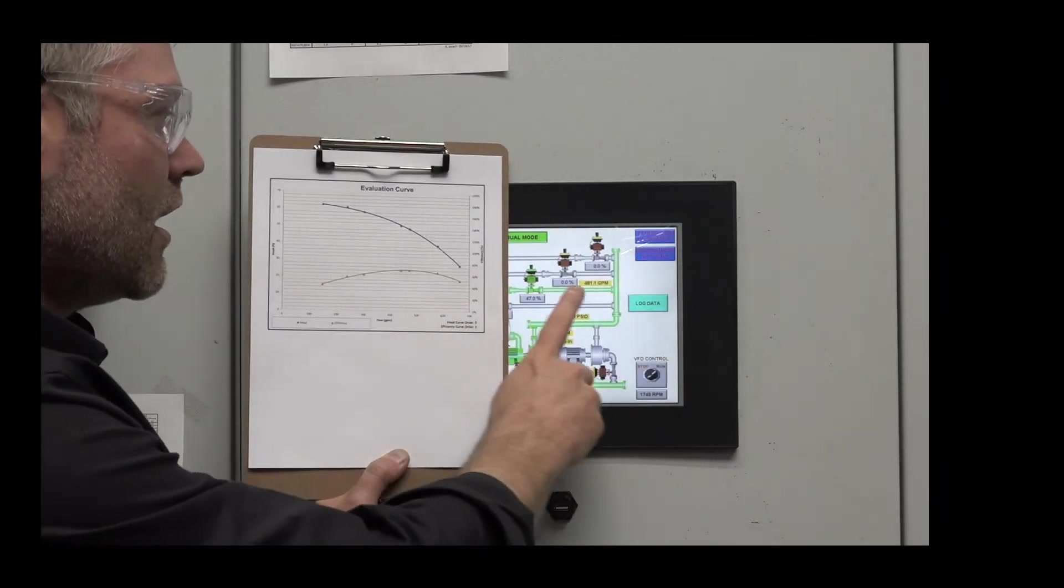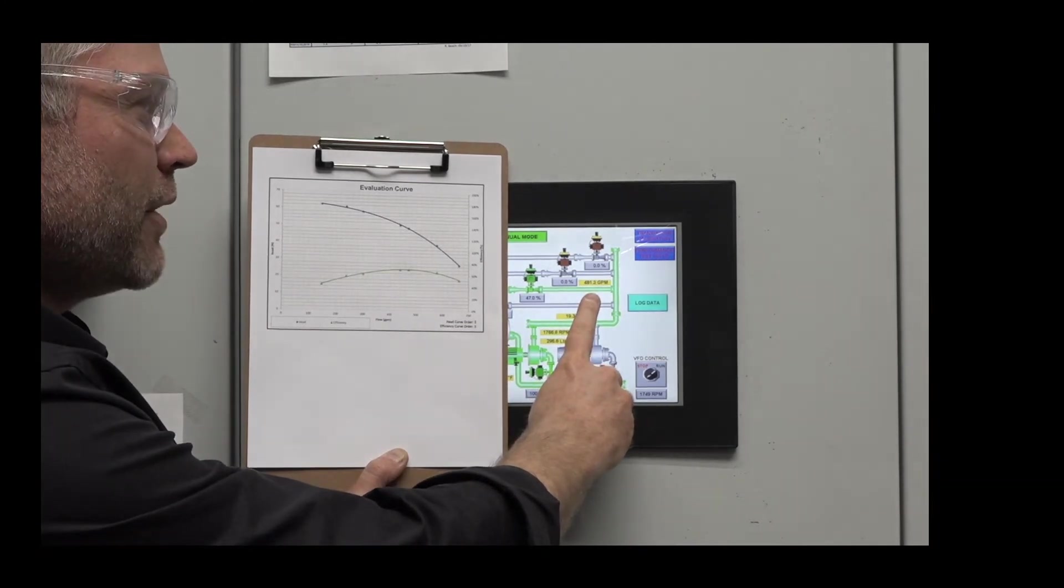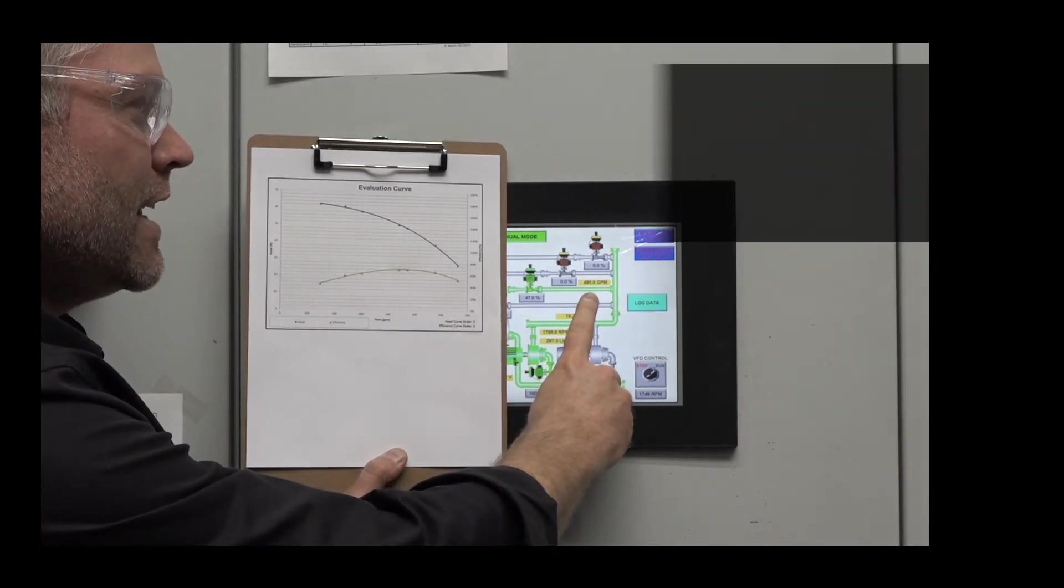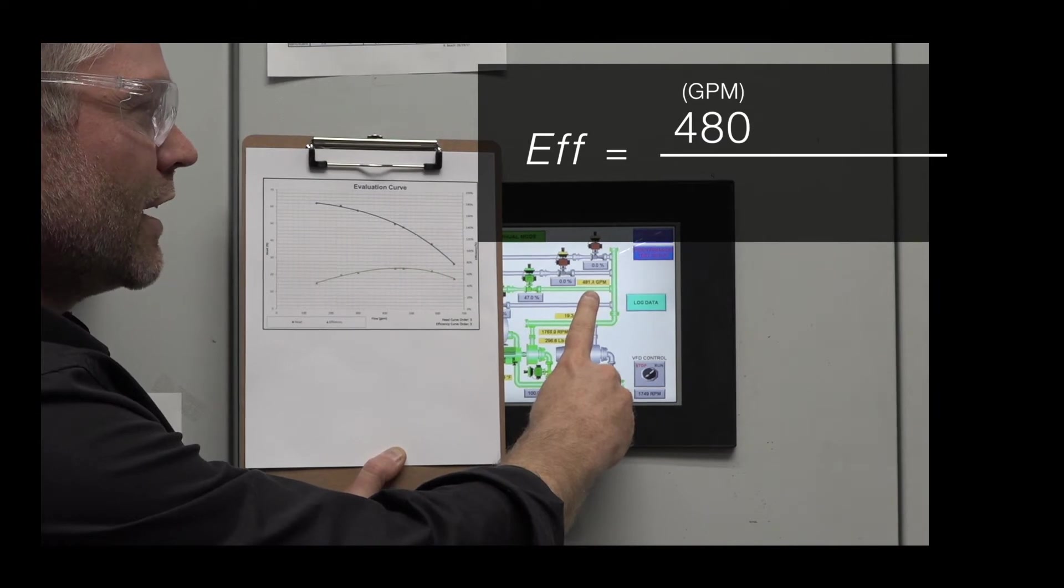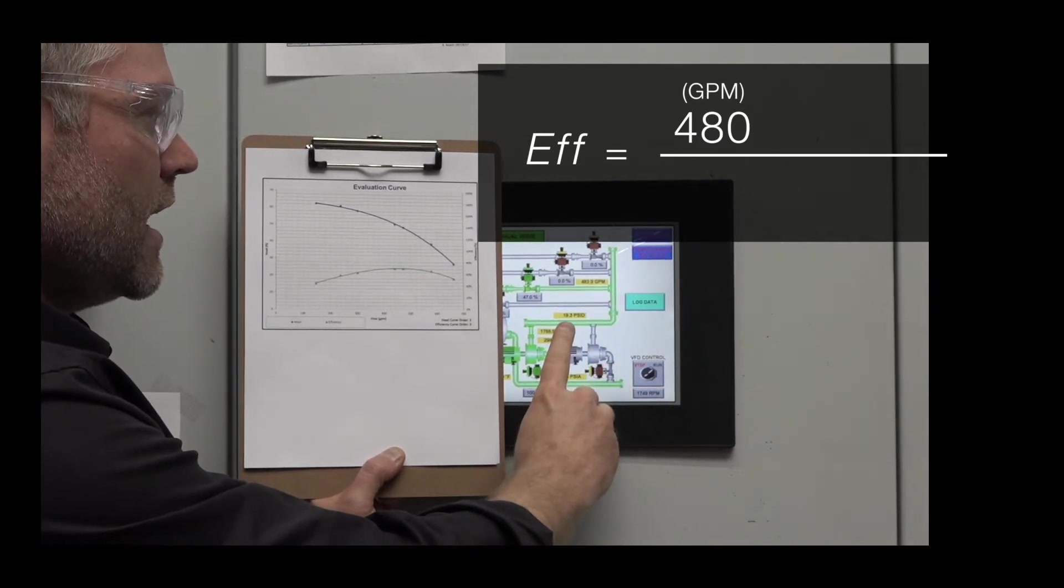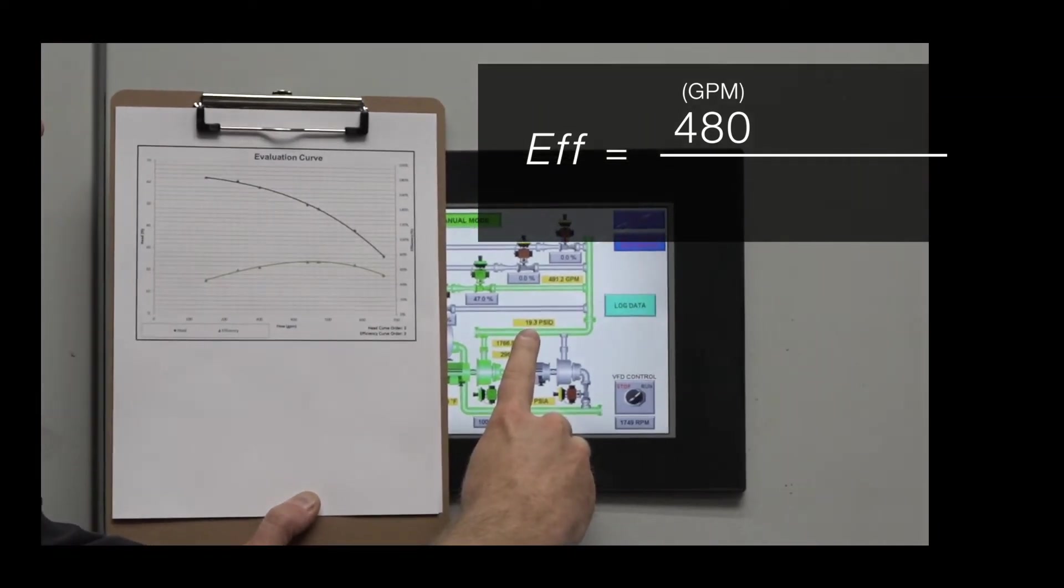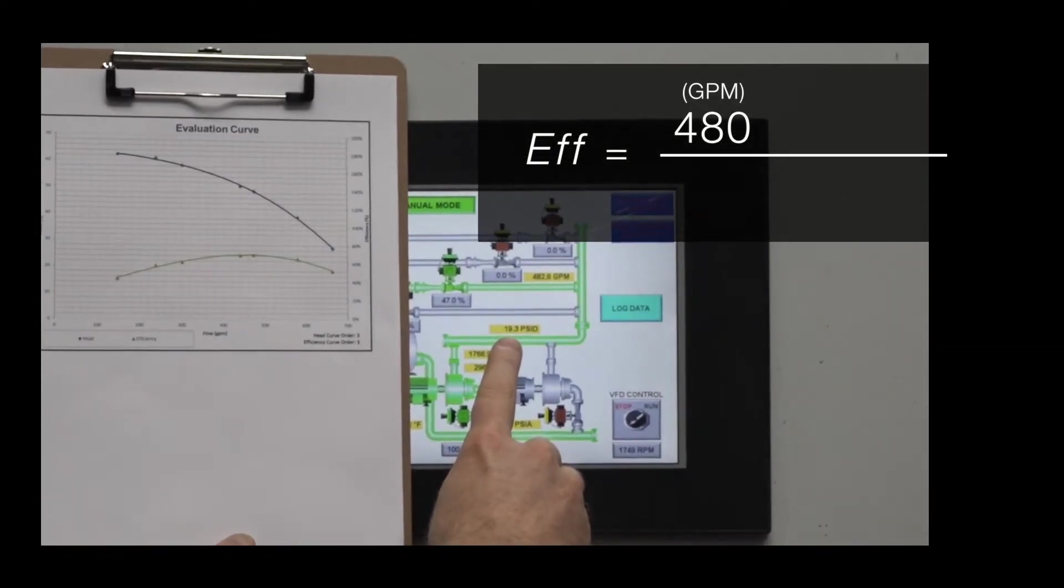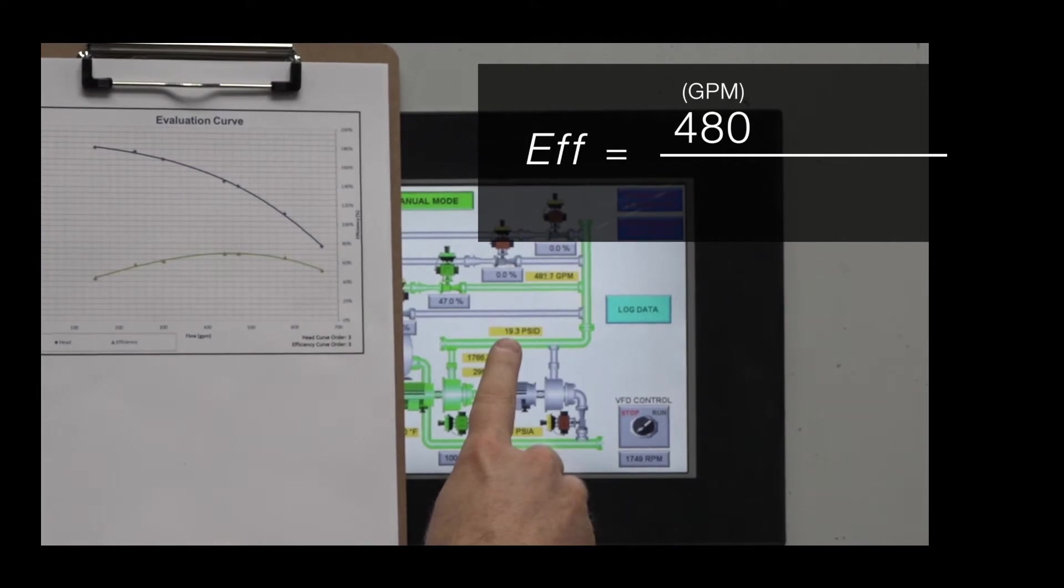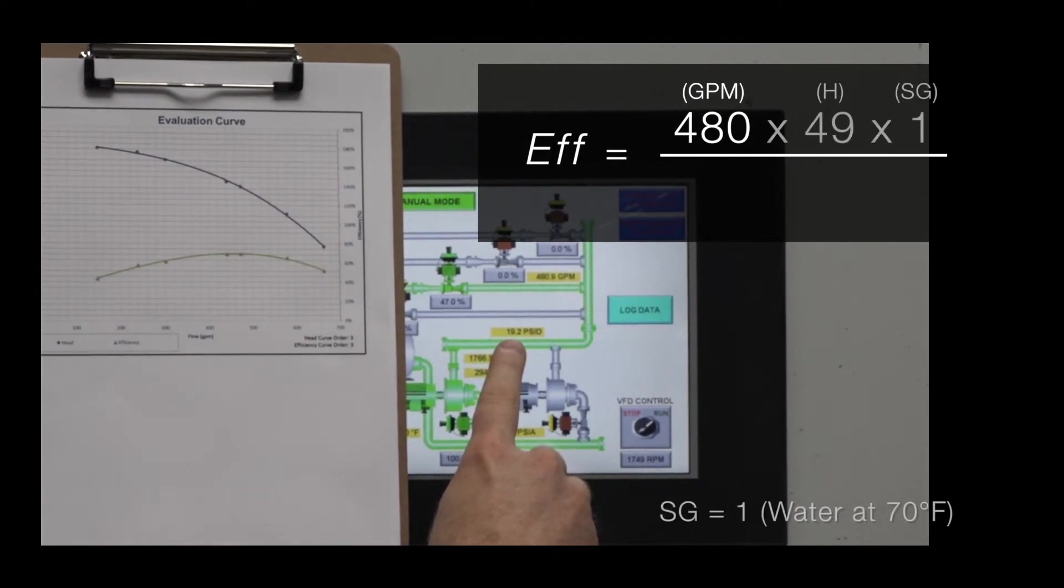Right now in our test lab this pump is operating at 480 gallons per minute, so this is very close to our best efficiency point. The total differential pressure is measured at 19 psi and that converts to about 49 feet of head.